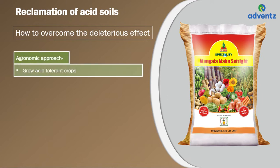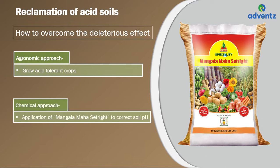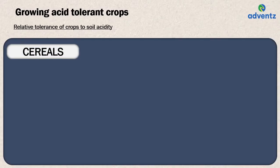We can adopt a judicious mix of two approaches to overcome the problems caused by acidity: an agronomic approach and a chemical approach. The agronomic approach is to grow acid-tolerant crops, and the chemical approach is the application of Mangala Mahasatrite to correct soil pH. We should choose crops based on their tolerance to grow in soils of differing acidity, as shown in the following tables.